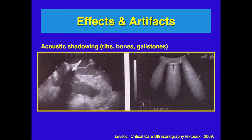Acoustic shadowing is generally seen with ribs, bones, and gallstones. On the left you see an image with a bright black shadow behind it, usually due to a bright structure such as a gallstone just anterior to it. On the right you see two rib shadows occurring because bone causes a shadow behind it.